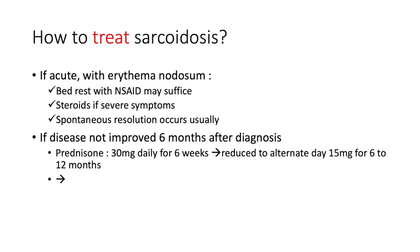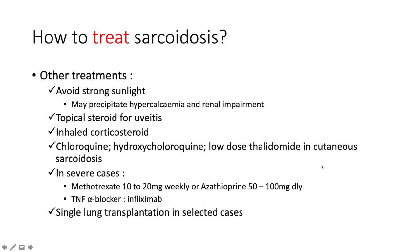Ideally, start at 30 mg daily for six weeks, then reduce to 15 mg on alternate days for 6 to 12 months.